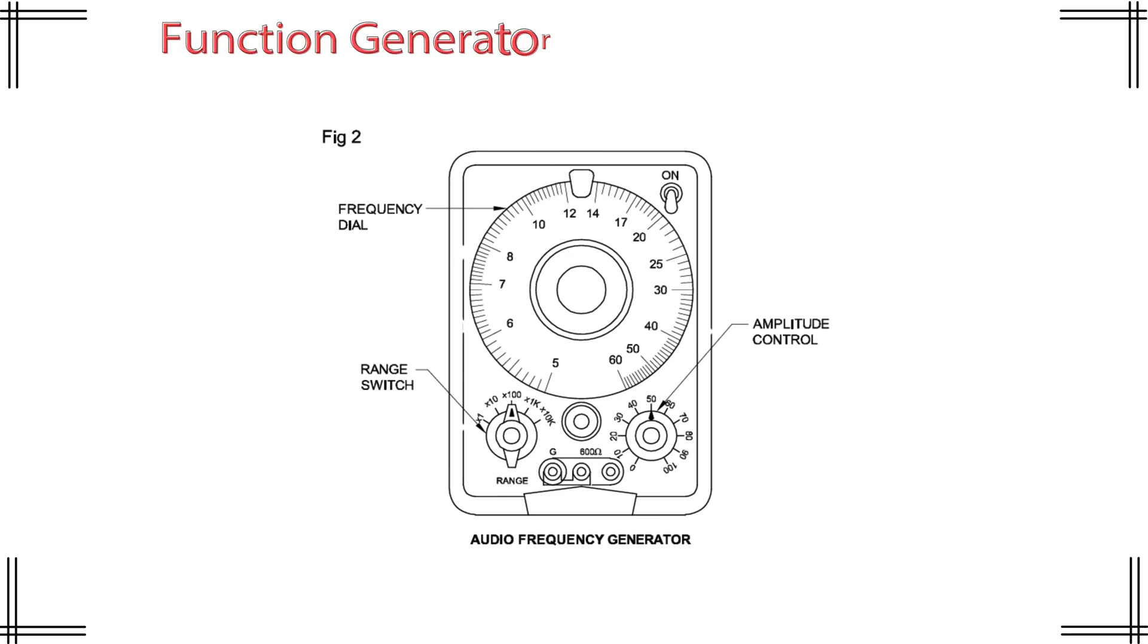Audio frequency generator. Number one. Frequency dial. Top center. Label: Frequency dial. Function: Selects the exact frequency output of the generator. Range: Marked from 0 to 60 multiplied by the selected range factor. Use: Set desired output frequency in combination with the range switch. Example: If the dial is at 6 and the range is set to 100 times, the output frequency is 600 hertz.